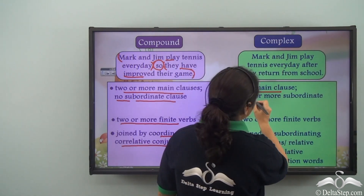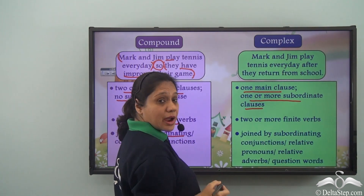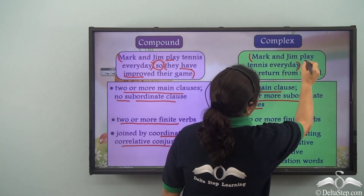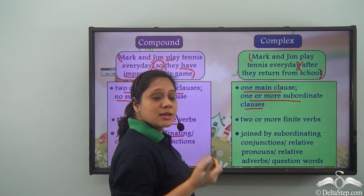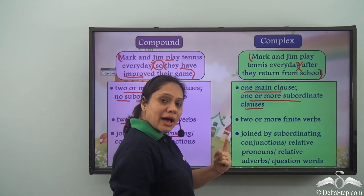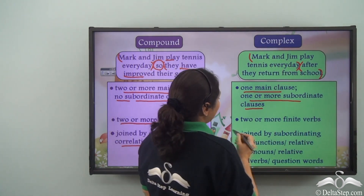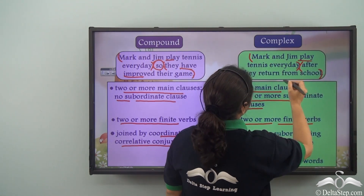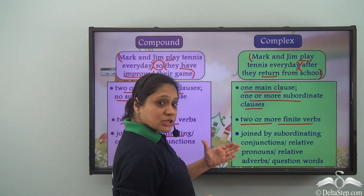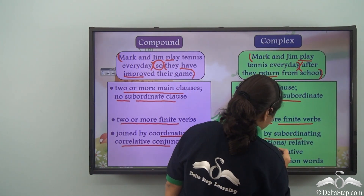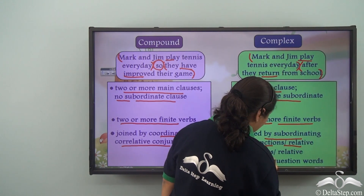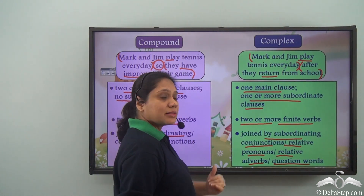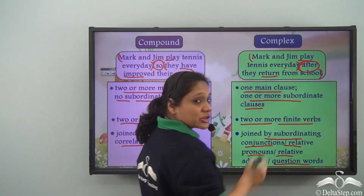A complex sentence has one main clause and one or more subordinate clauses. In our example, 'Mark and Jim play tennis every day' is the main clause, and 'after they return from school' is the subordinate clause. It has two finite verbs: 'play' and 'return.' These clauses are joined by subordinating conjunctions, relative pronouns, relative adverbs, or question words — here, by the conjunction 'after.'